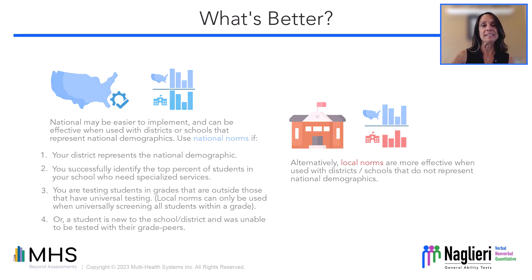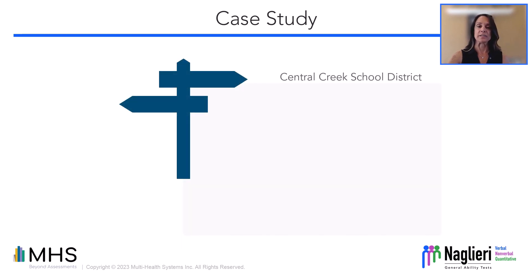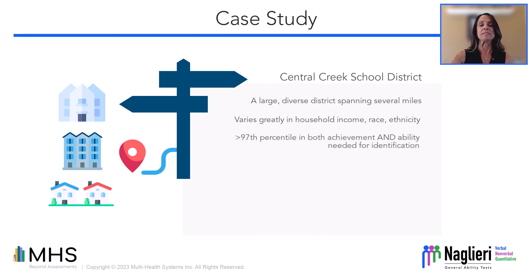To demonstrate, let's look at a case study of a mock school district. Imagine Central Creek School District. This large urban district is in the southwest part of the United States and spans several miles with neighborhoods differing greatly in household income, race, and ethnicity. The district policy states that students must score at the 97th percentile or above in both achievement and ability to be identified for gifted services.